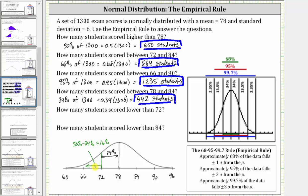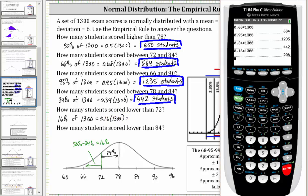We need to be careful here, because we cannot just rely on the empirical rule and add 2.35% and 13.5%, since the empirical rule only accounts for 99.7% of the data. So the number of students that scored lower than 72 is 16% of 1,300, which is 0.16 times 1,300, equaling 208 students.